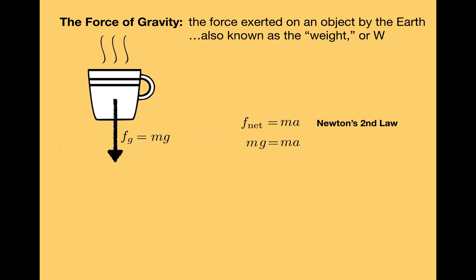So I will substitute mg for f net. I have to be careful though. Typically down is considered to be negative, and I'll follow that convention here. So in fact, negative mg is equal to ma. Noting that m shows up on both sides of the equation, m can be eliminated.